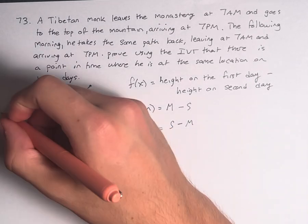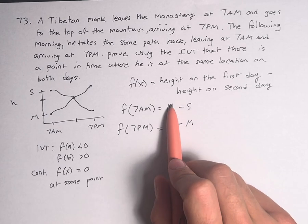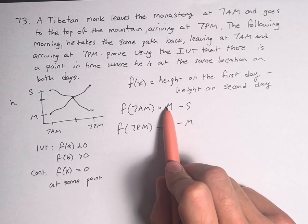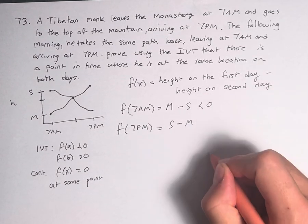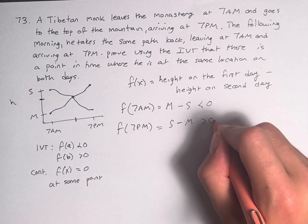The height of the monastery is less than the summit. So M minus S has to be less than 0. S minus M, therefore, has to be greater than or equal to 0.